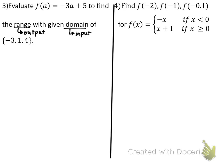So let's pretend we're putting negative three as our ingredient. Instead of putting A, we're going to put negative three into our math machine. We get negative three times negative three plus five. What's negative three times negative three? Positive nine. And then what's nine plus five? Fourteen. That means when I put the ingredient of negative three into this math machine, I get out fourteen.